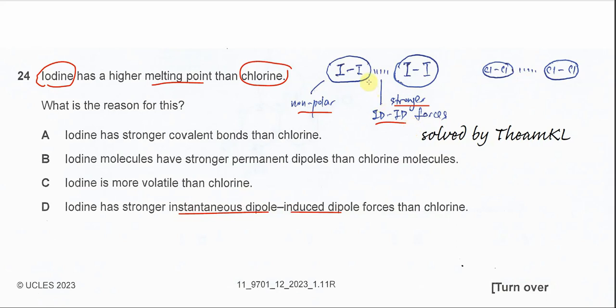Why? Because iodine is larger. When the molecules is larger then it has the stronger IDID forces and we know that iodine must have the higher melting point than the chlorine.